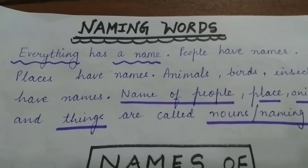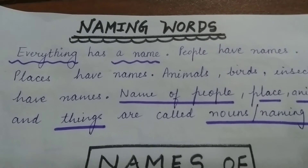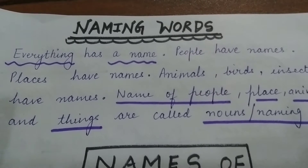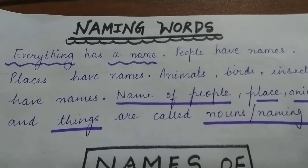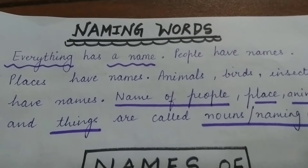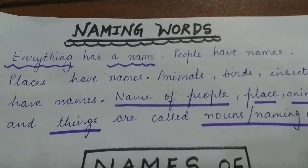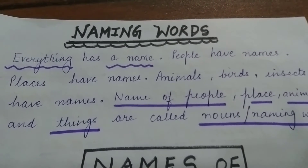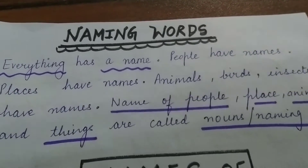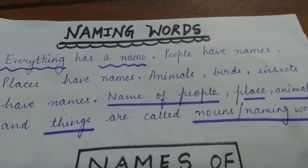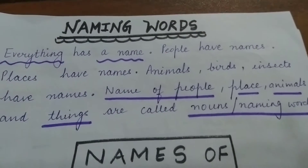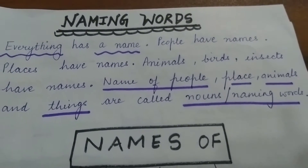So everything has a name, children. In this world, everything has a name. People have names, places have names, animals have names, birds, insects, fruits, vegetables — everything in this world has a name. I have a name, you have a name. So name of people, place, animal and things are called naming words or noun.